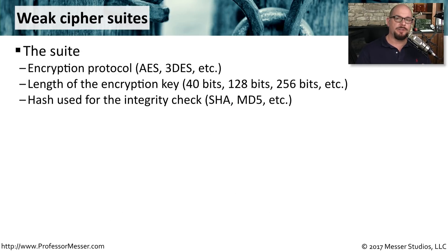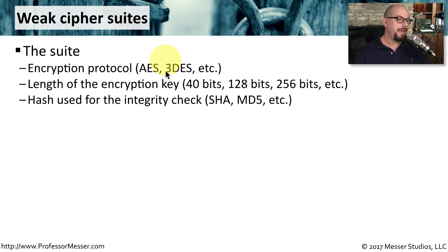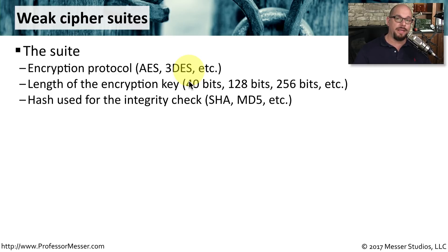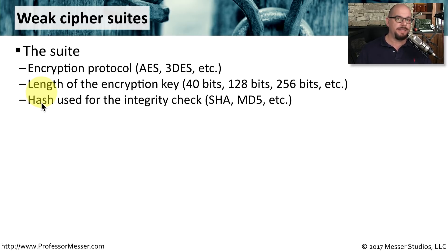We often say to protect our data you should use encryption, but the reality is there are hundreds and hundreds of different ways to encrypt data. If you're not using a strong cipher suite, you may be encrypting data that could be easily decrypted by the bad guys. A cipher suite consists of the encryption protocol itself — this could be AES or Triple DES or a number of other encryption protocols. It includes the length of the encryption key — generally, the longer the key, the stronger the encryption. Usually this type of suite will also include a hash so that you can perform an integrity check of the data when it's received, such as SHA or MD5 or one of the many other hashing algorithms.